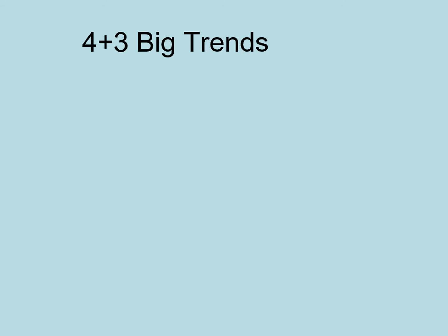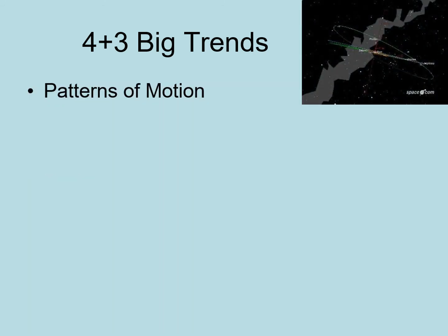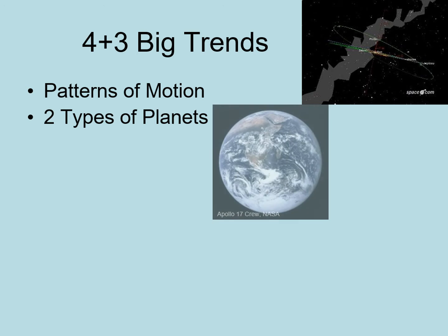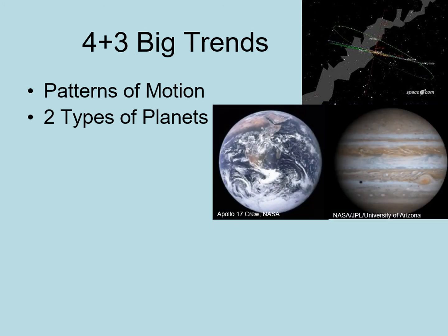Remember that any model of the formation of the solar system should explain why these trends exist. First, we have the patterns of motion — most objects orbit the sun in the same direction, and the planets are all very close to the same orbital plane. Next, we have two types of planets: small terrestrials and large Jovians, divided between the inner and outer solar systems.